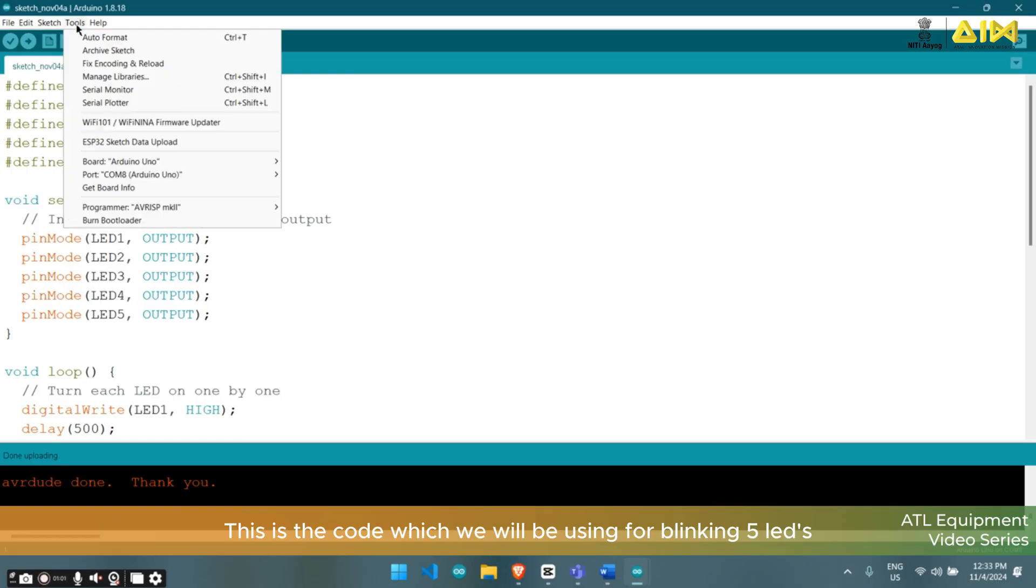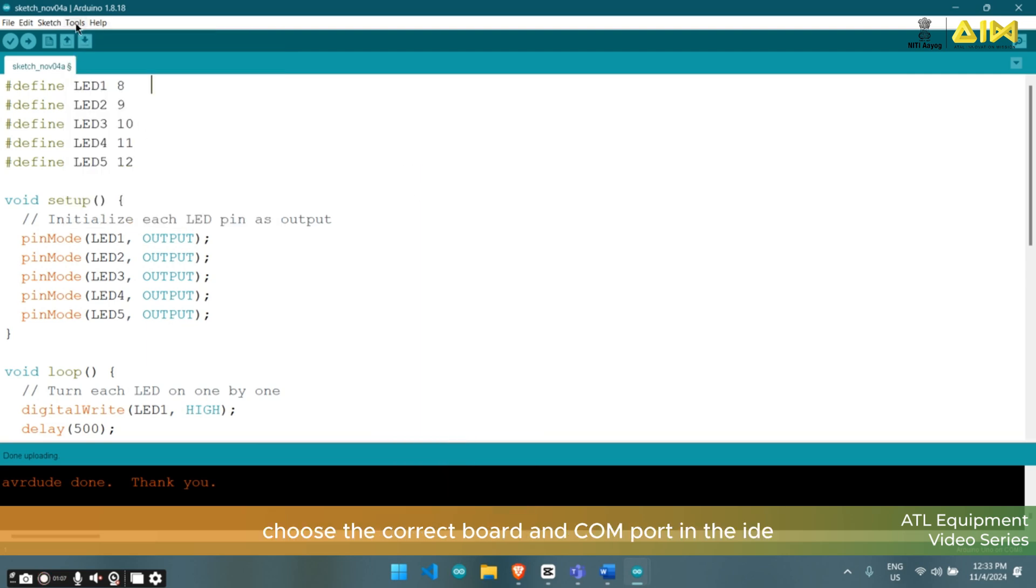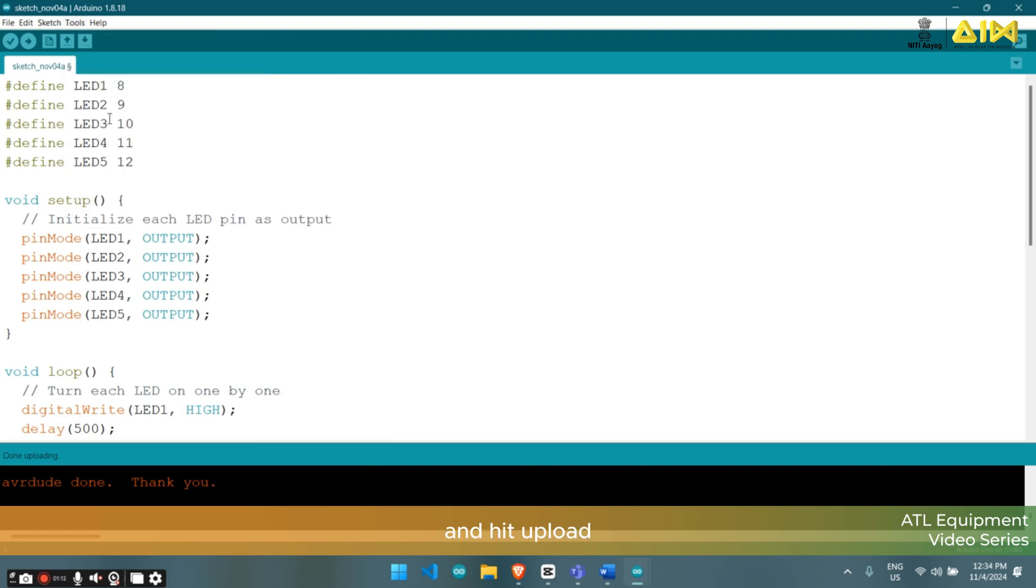This is the code which we will be using for blinking 5 LEDs. To upload the code, connect your Arduino Uno, choose the correct board and correct port in the IDE, and hit upload.